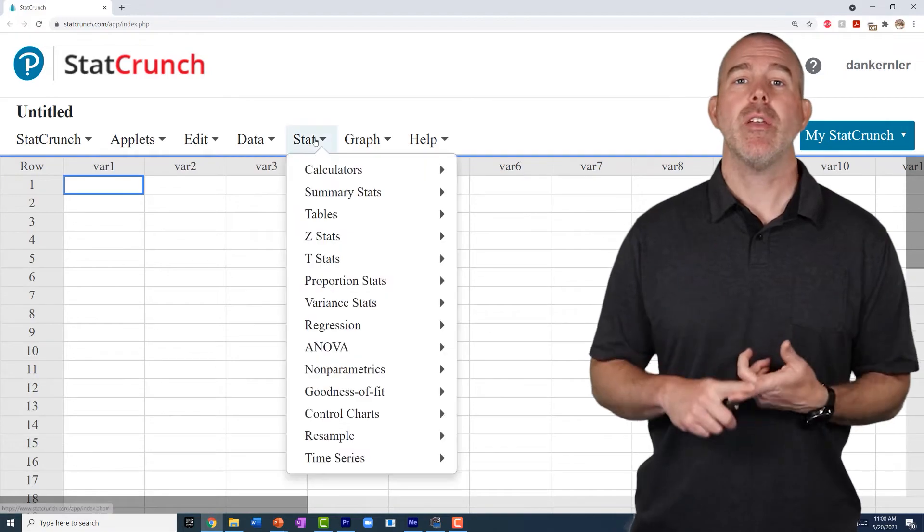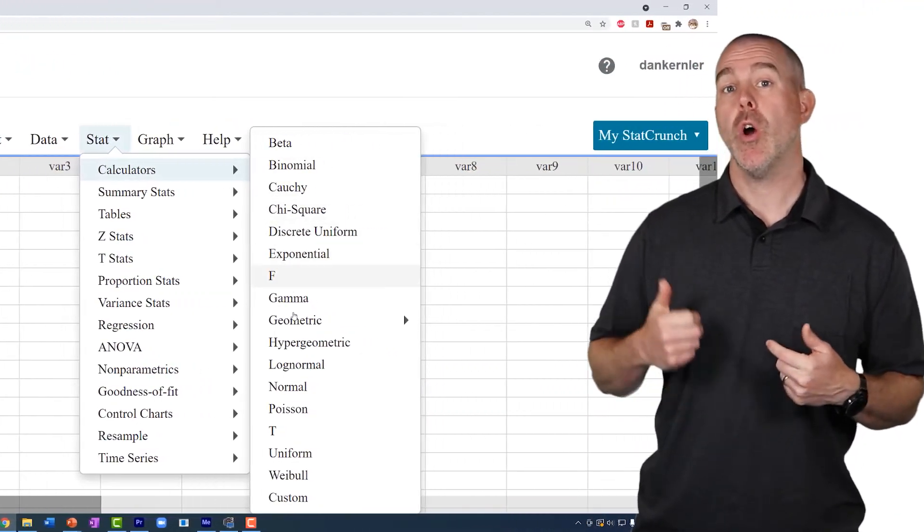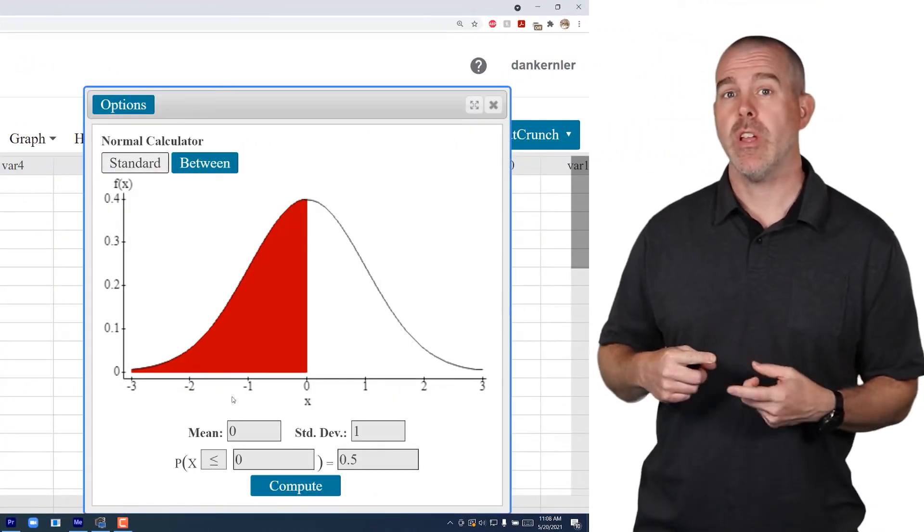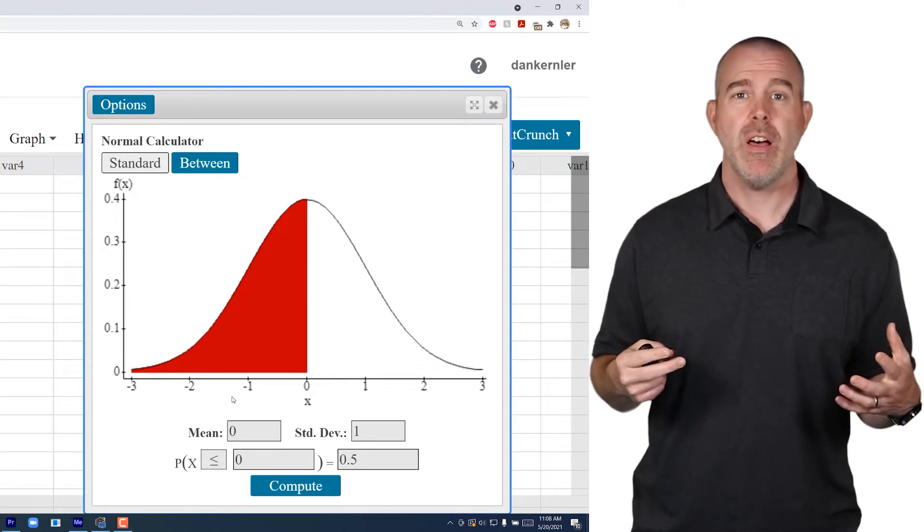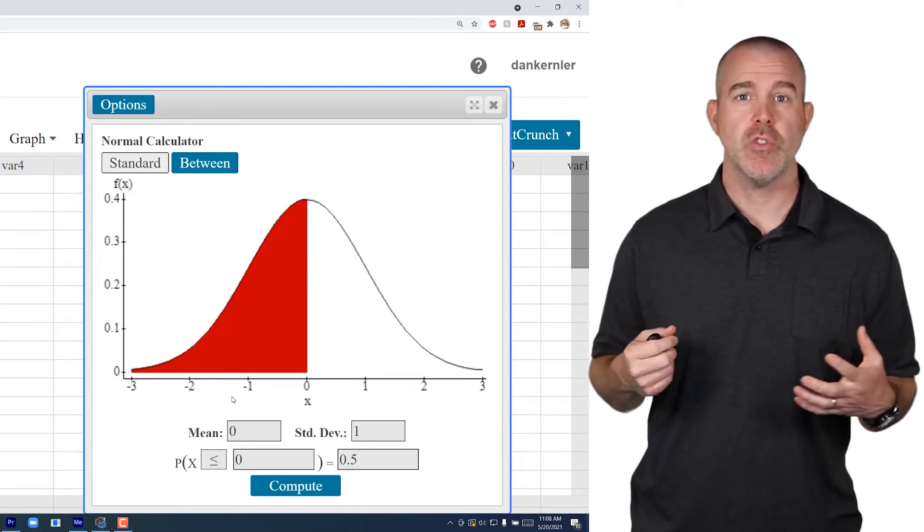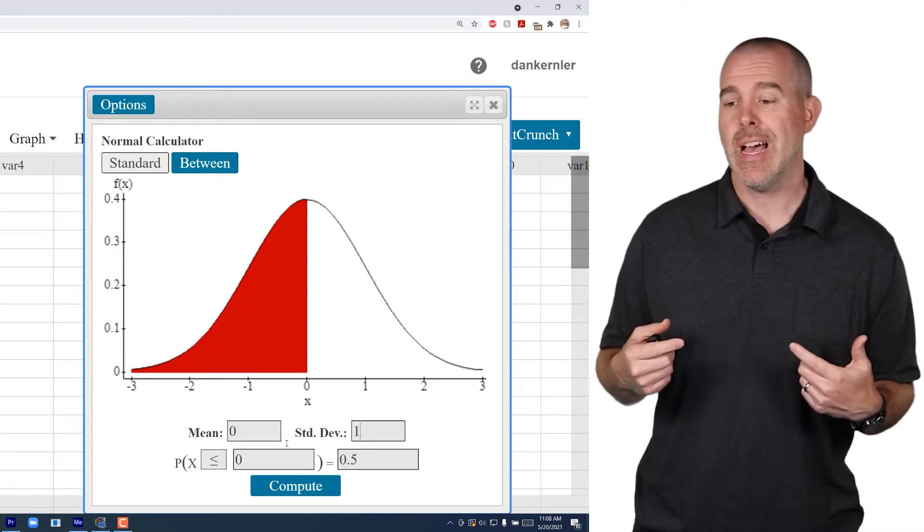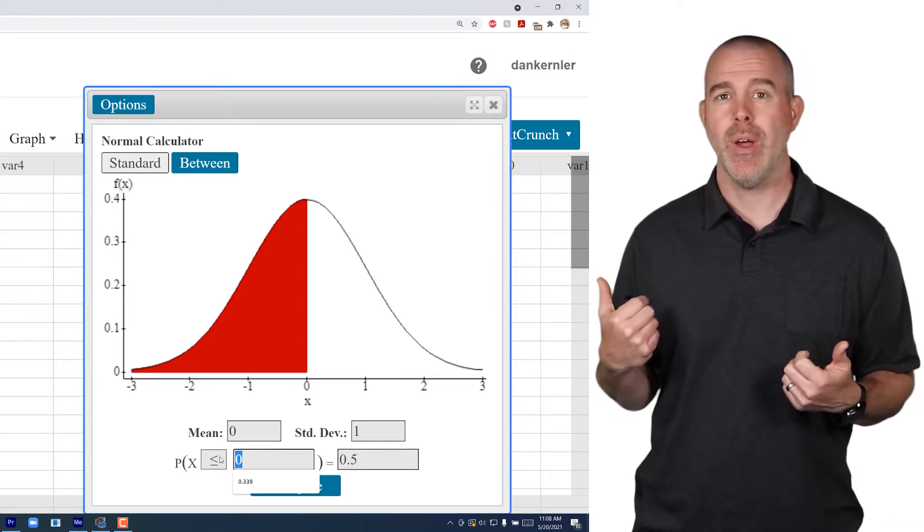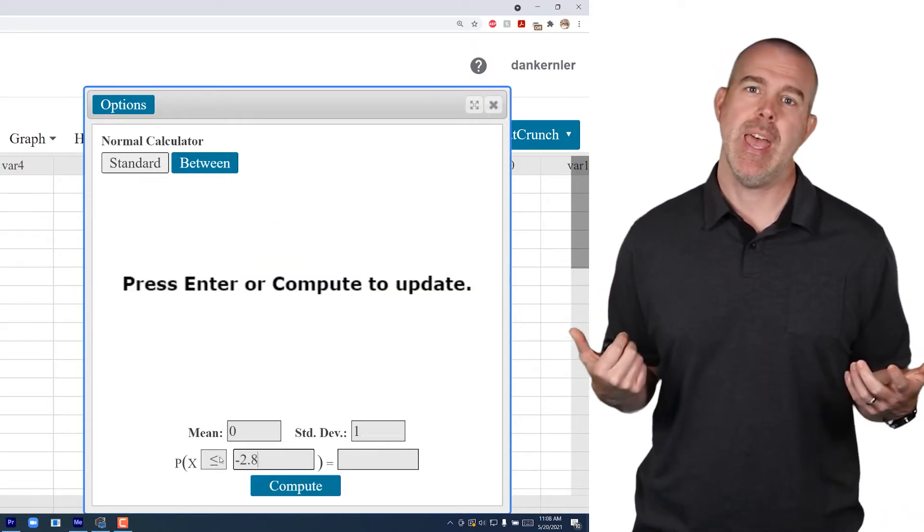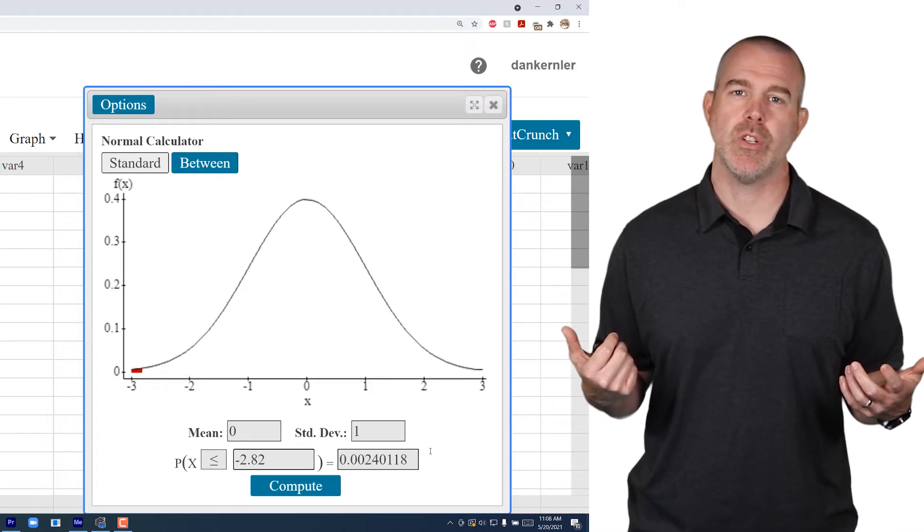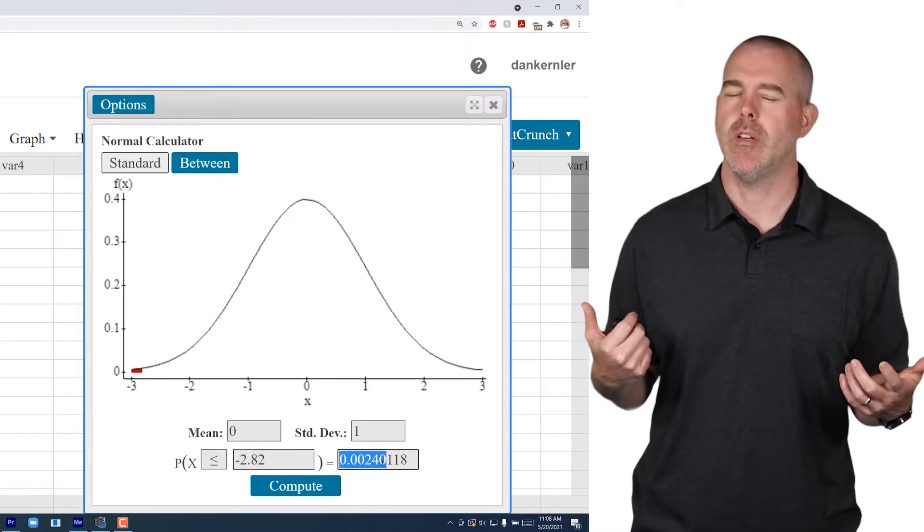It's pretty straightforward. The calculators, you've done this for binomials. So we're going to go Stat, Calculators, and then do Normal. The default is the standard normal distribution. So you'll see zero and one, and we want to go less than or equal to negative 2.82. Hit Compute, and then you get the 0.0024, just like we did on the table, but a little bit easier.